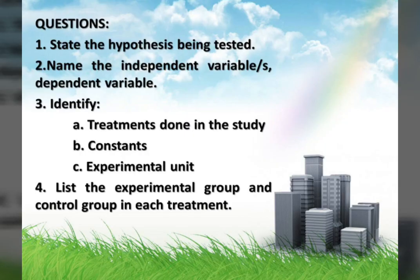With the experimental design given, can you now answer the following questions? Number one, state the hypothesis being tested. Two, name the independent and dependent variable. Three, identify the treatments done in the study, constants, and experimental unit. And number four, list the experimental variable and control variable in each treatment.